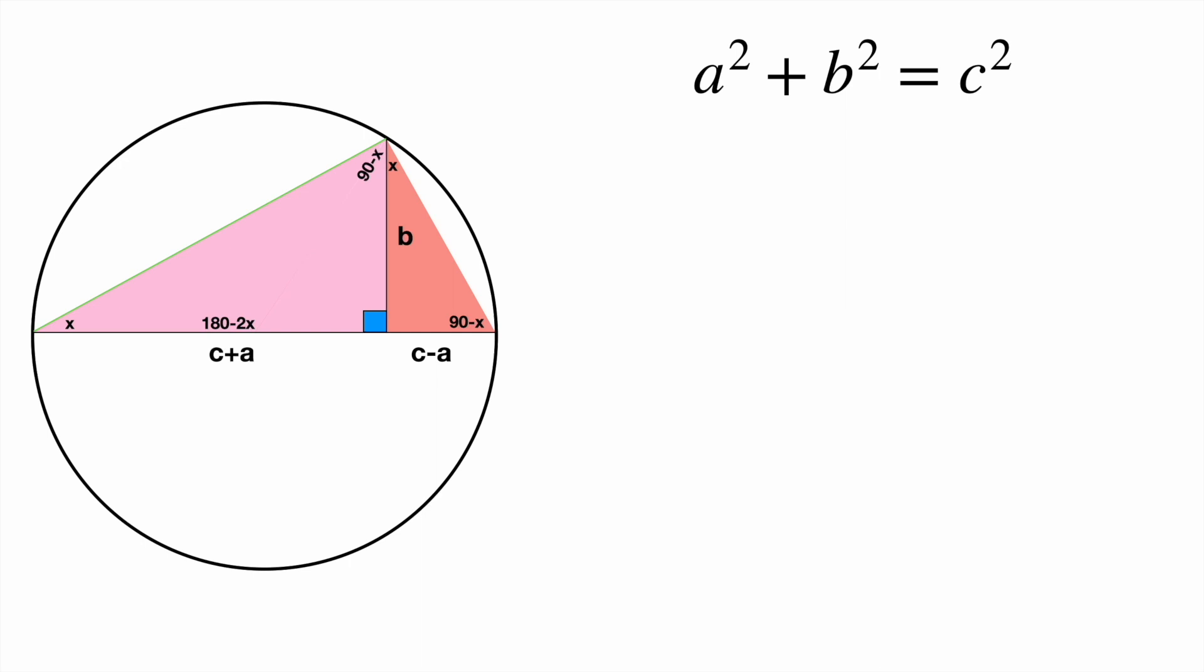Knowing this, we can set up a proportion of the corresponding sides, which in our case looks like c plus a over b is equal to b over c minus a. We can do some algebra to see what we end up with. You guessed it, the Pythagorean theorem!